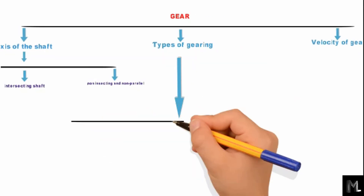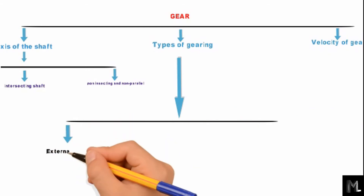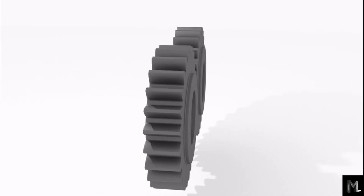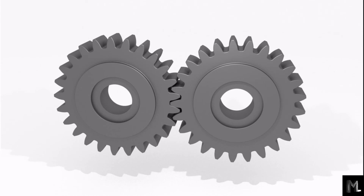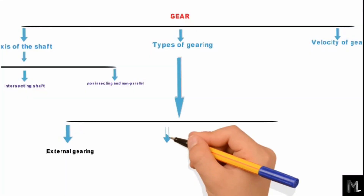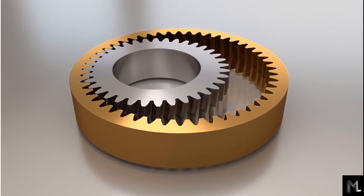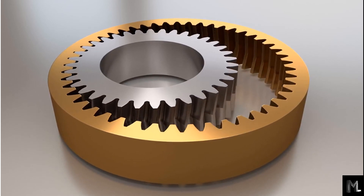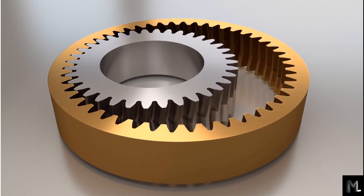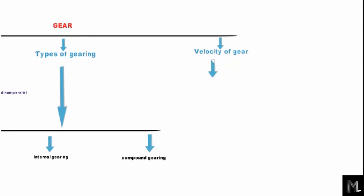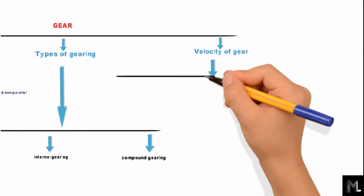On the basis of types of gearing, gears are classified as follows. The first is external gearing, where the gears are attached externally. In external gearing, if one gear rotates clockwise, the other rotates anti-clockwise. The second type is internal gearing, where both gears rotate in the same direction. The third type is compound gearing.